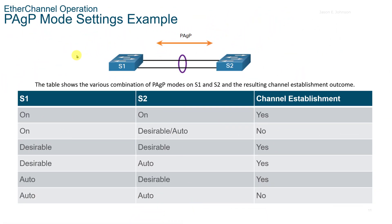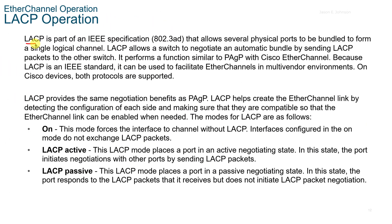In this table, we see the settings examples. If Switch 1 is ON and Switch 2 is ON, then you get the channel established. If S1 is ON but S2 is DESIRABLE, then you get no channel. I would recommend for the exam that you be familiar with the different modes and whether you'll get a channel establishment, because you're most likely going to see a question dealing with which modes are on which switch and whether it establishes a channel or not.